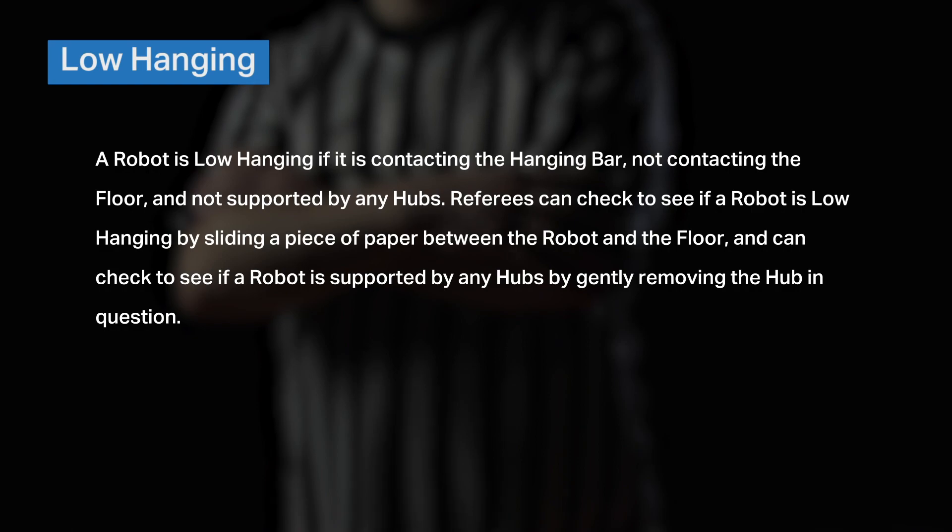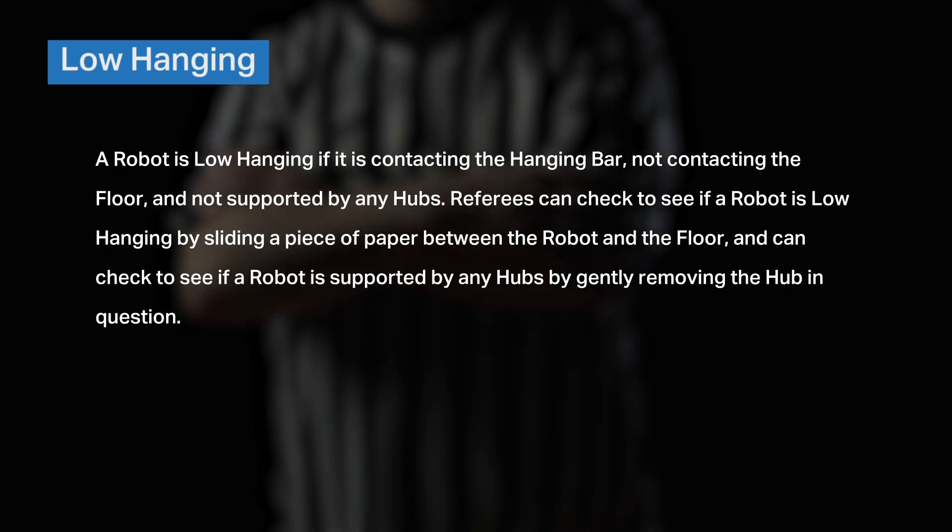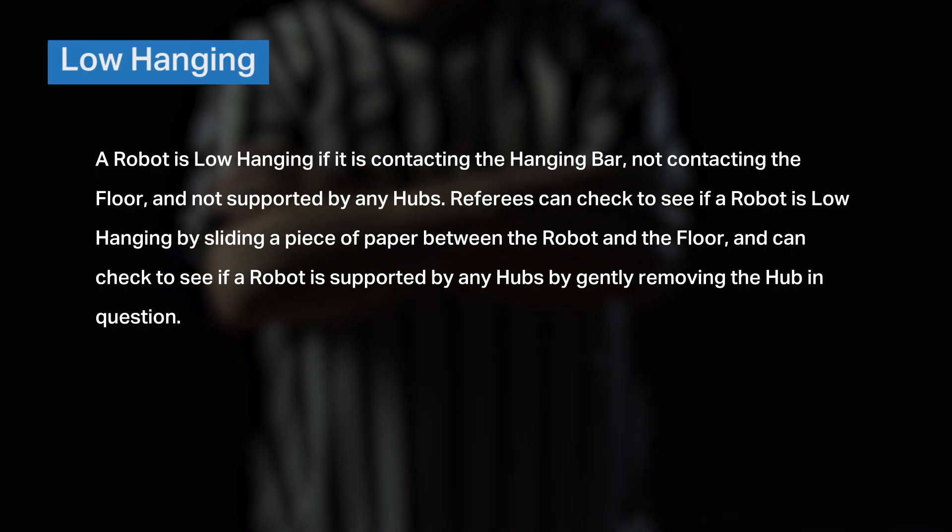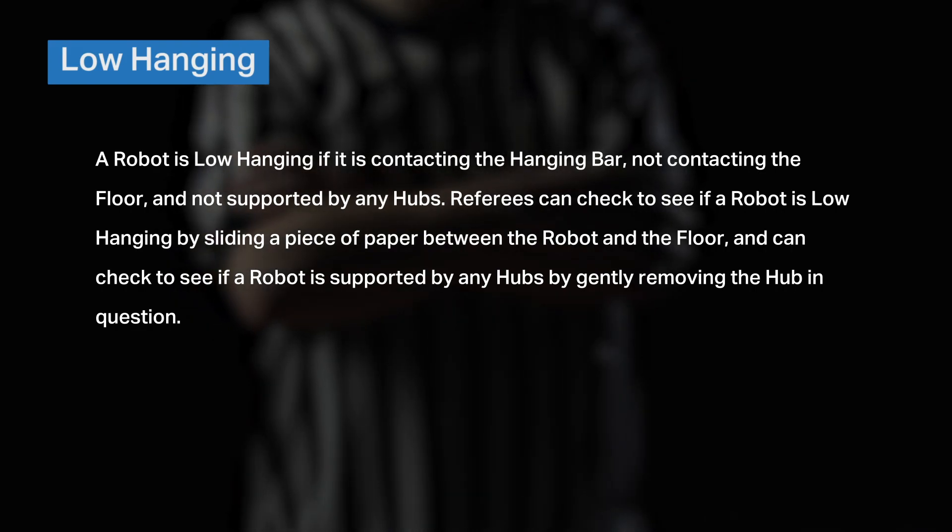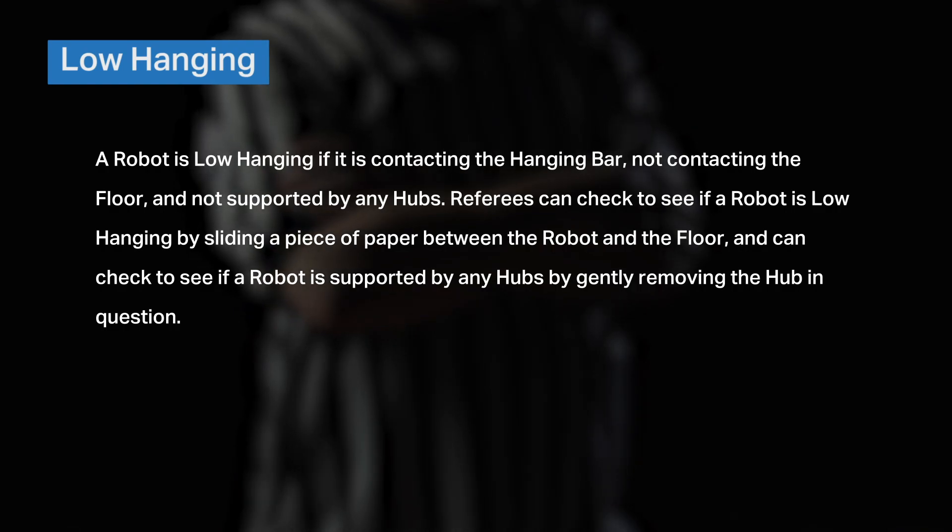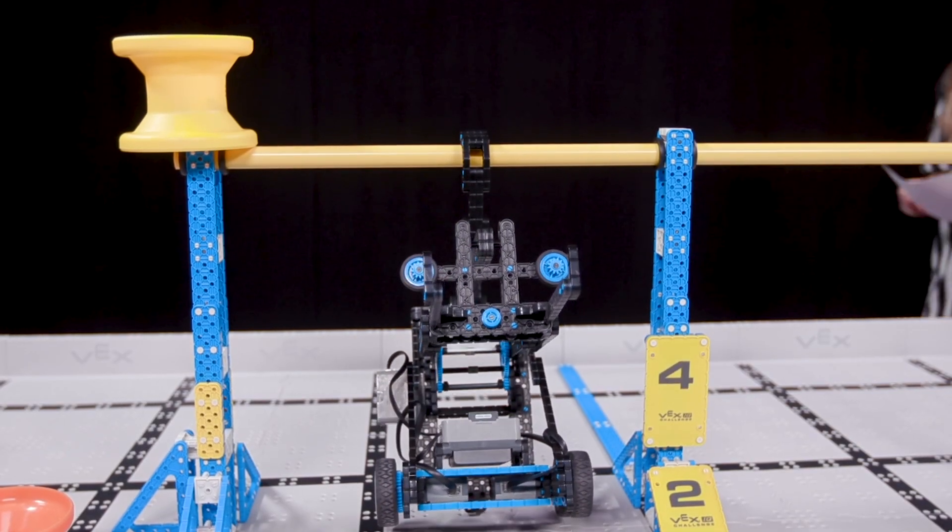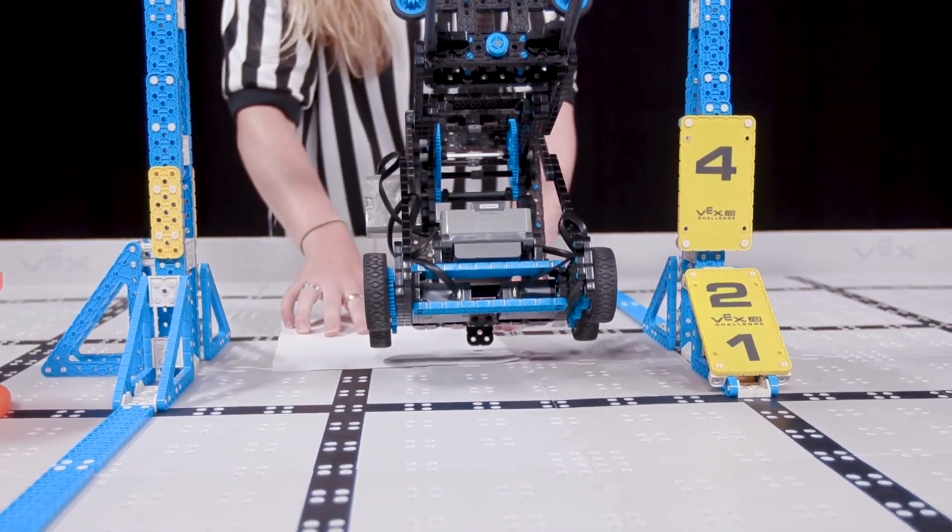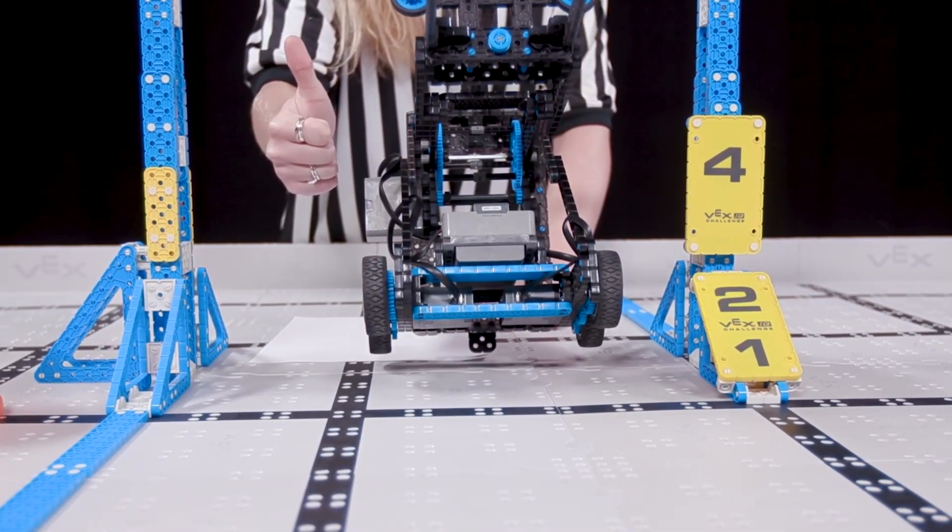Next, low-hanging. A robot is low-hanging if it is contacting the hanging bar, not contacting the floor, and not supported by any hubs. Referees can check to see if a robot is low-hanging by sliding a piece of paper between the robot and the floor and can check to see if a robot is supported by any hubs by gently removing the hub in question. So, to get from parking to low-hanging, a robot just needs to lift off the floor, even if by a little bit. The paper test is going to be the referee's frontier.